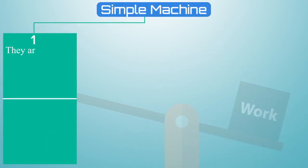Okay friends, now let us discuss about the uses of simple machines. Number one, they are used to change the direction of force.